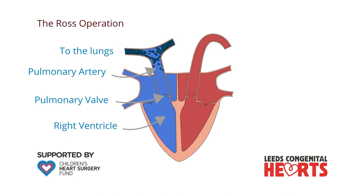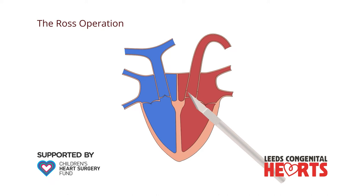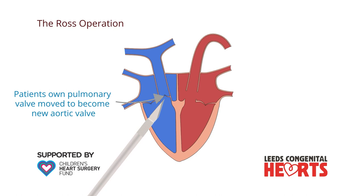the diseased aortic valve and a small amount of the aorta are removed. The patient's own pulmonary valve and a small amount of the pulmonary artery are also then removed and sewn into where the aortic valve used to be, to become the new aortic valve.